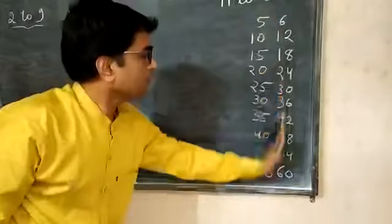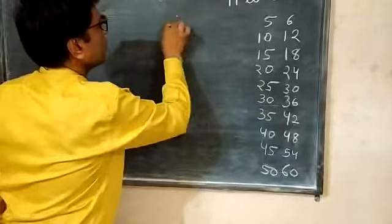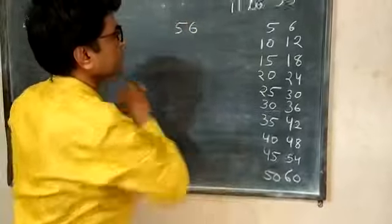Now separately we have written the table of 6 and 5. Now we'll write the table of 56. Understood?